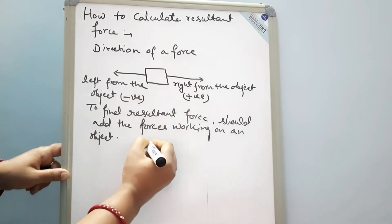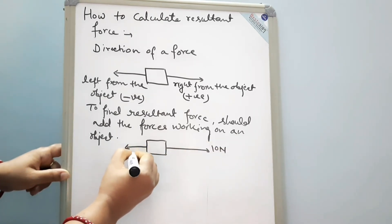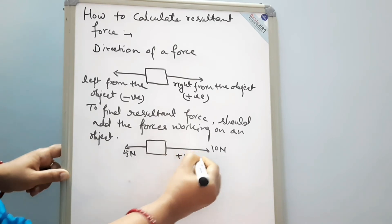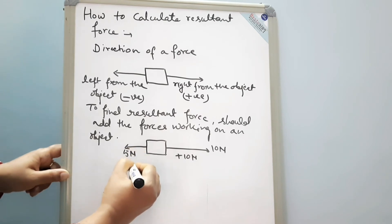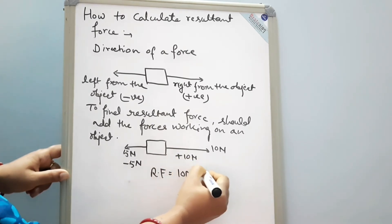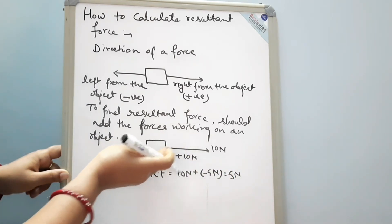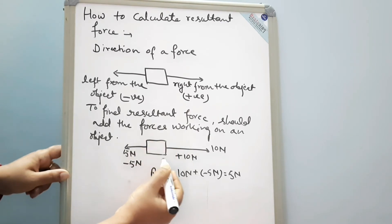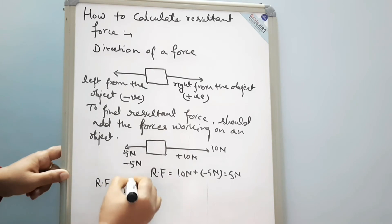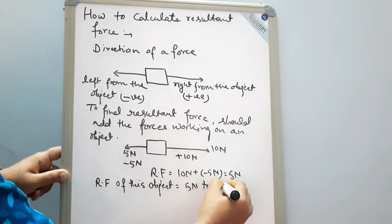Suppose this is a block with 10 Newton in one direction and 5 Newton in the other direction. Since the 10 Newton force is going right from the object, it is plus 10 Newton, and the 5 Newton force is going left, so it is minus 5 Newton. To get the resultant force, we add: 10 Newton plus minus 5 Newton, giving us 5 Newton. The object will move in the direction of the greater force, so the resultant force is 5 Newton towards east.